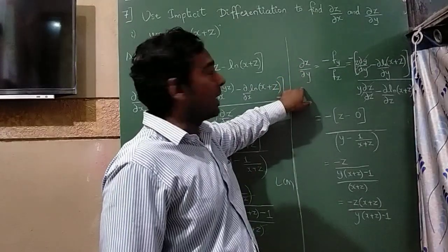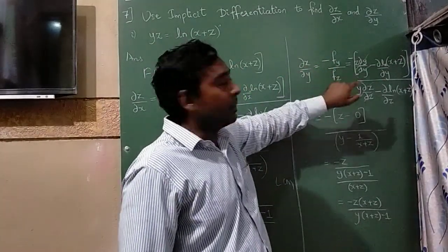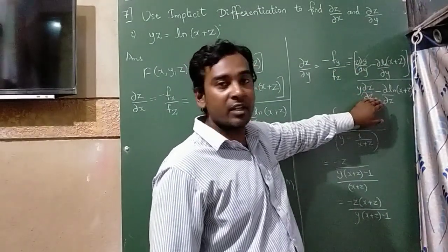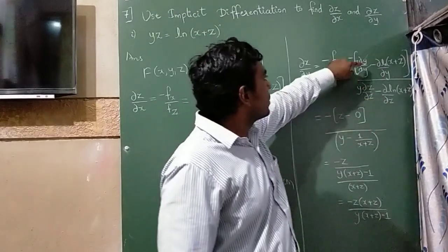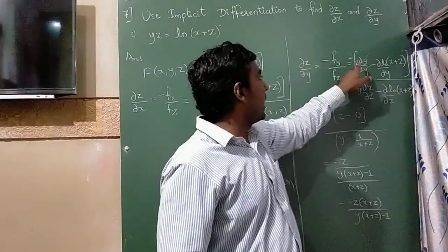dz by dy, the formula is minus f of y divided by f of z. It means numerator part we need to differentiate with y, denominator part we need to differentiate with z. So if I differentiate numerator part with respect to y,